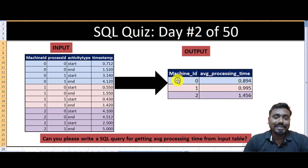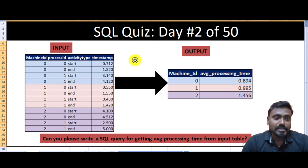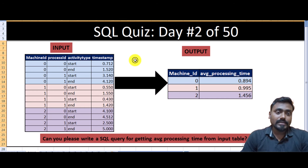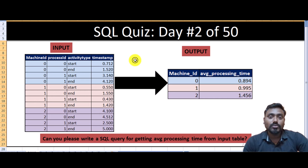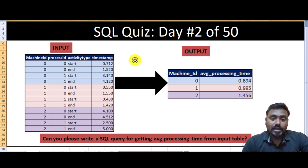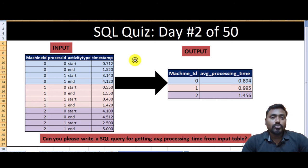Here we have the input data. This table has four columns: first is the machine ID, second is the process ID, third is the activity type, and fourth is the timestamp. In the output, we just want two columns: machine ID and the average processing time. The question is: can you write a query to get the average processing time from this input table?